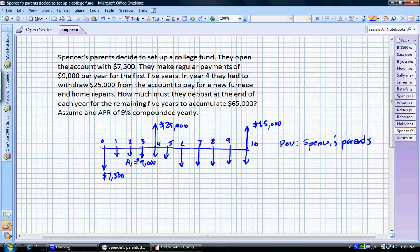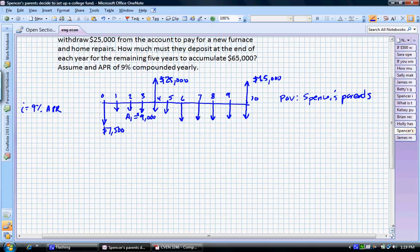Remember, we have an I of 9% APR. So let's go through this problem. Let's look first at the cash flow diagram and talk through it. What we need to do here is we're going to try to convert everything to future value and set everything equal to $65,000 and find out what our A2 is. We don't know A2.